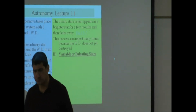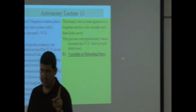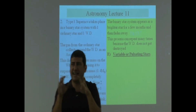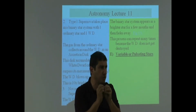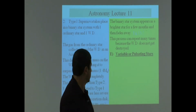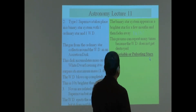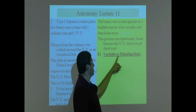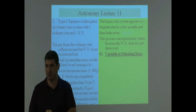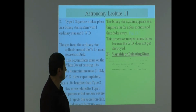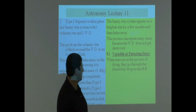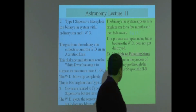Let's talk about that blue region I was mentioning. When a star is dying, if it goes through that blue region, it's going to start pulsating. These are known as pulsating stars — the other term for them are variable stars. When stars are in the process of dying, they go through the instability strip.